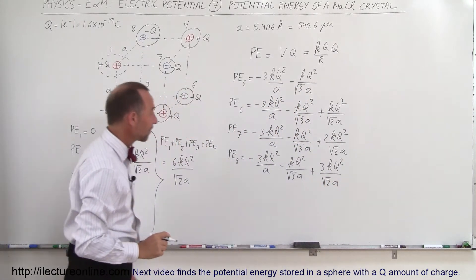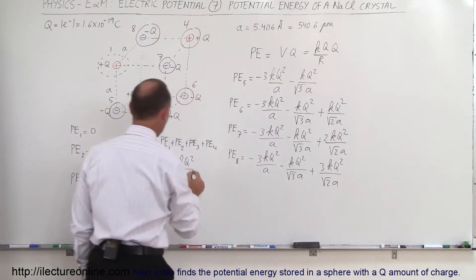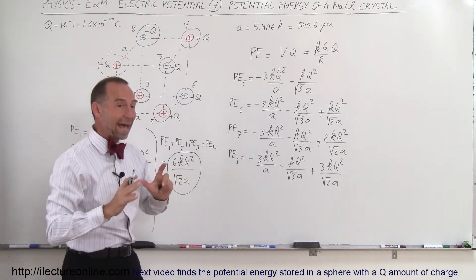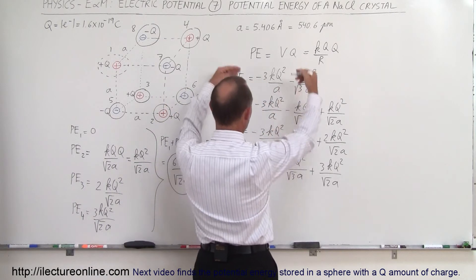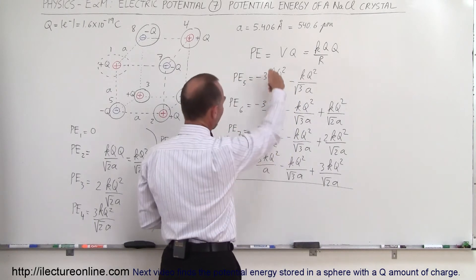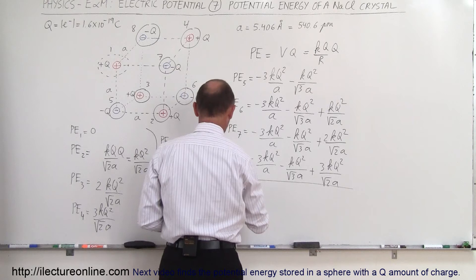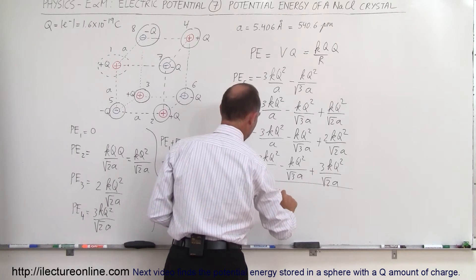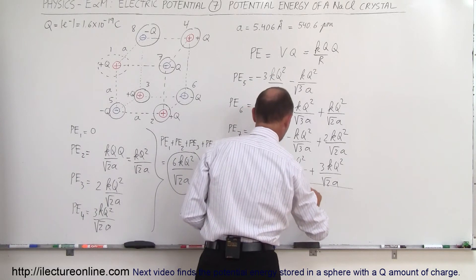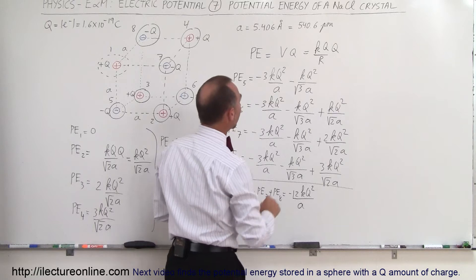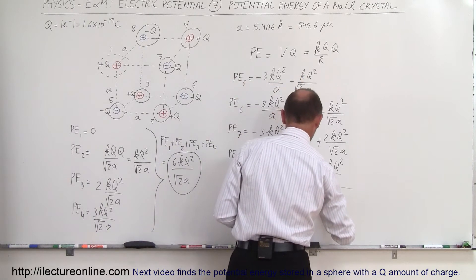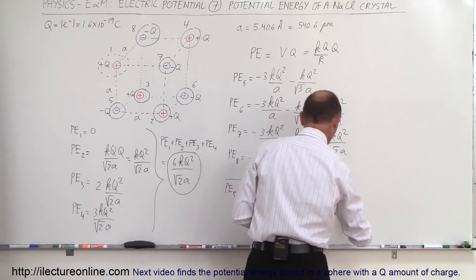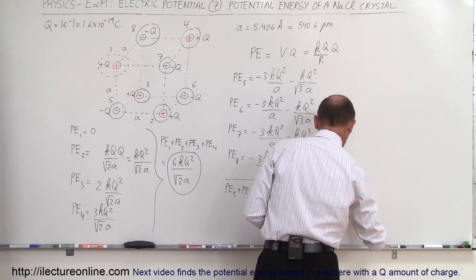So now we can add all those together. We have four identical sets of those terms, so potential energy 5 plus 6 plus 7 plus 8 is equal to minus 12 times KQ squared over A. We have four of those diagonal-cube terms, giving minus 4 KQ squared divided by the square root of 3 times A, and we have one, three, six of those face-diagonal terms, giving plus 6 KQ squared divided by the square root of 2 times A.